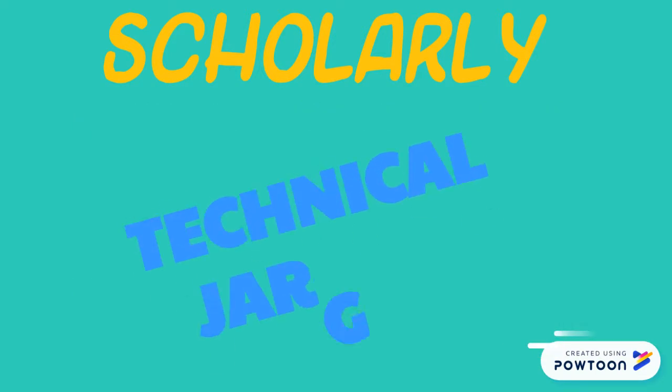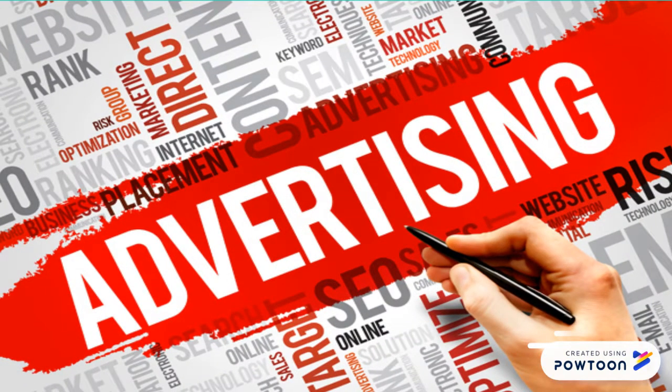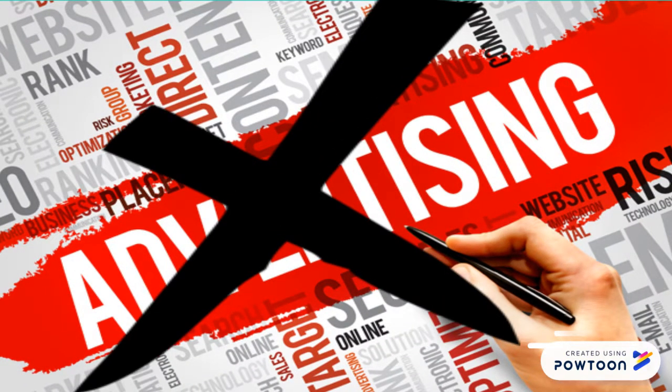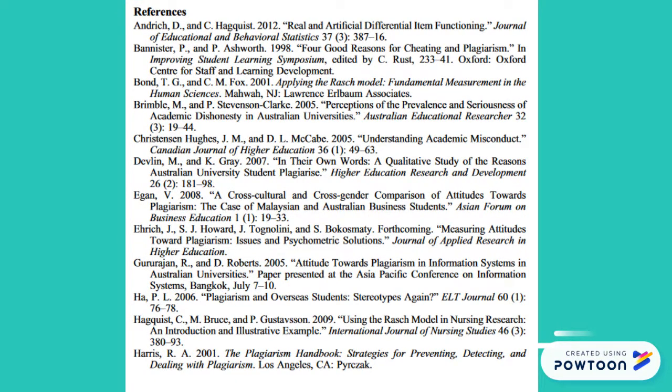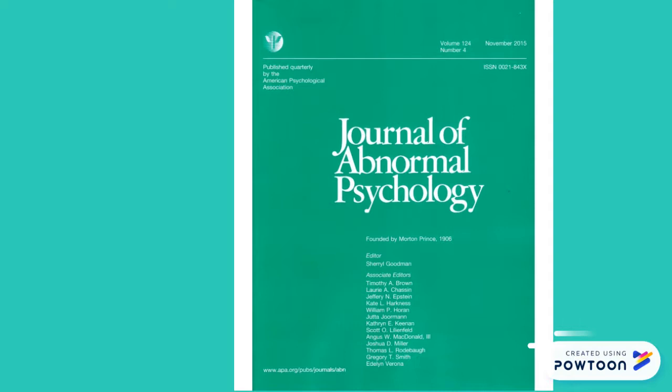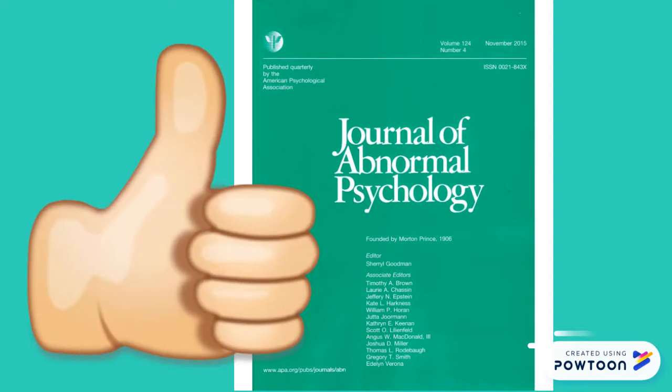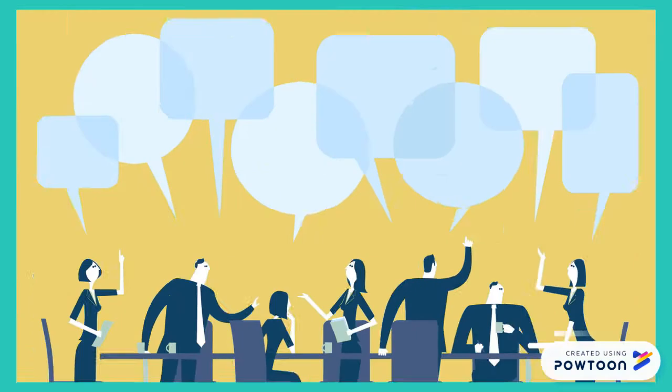Scholarly sources generally don't have very many ads, but they do have a long list of references or consulted works. An article from the Journal of Abnormal Psychology is a great example of a scholarly source. Scholarly sources mainly come from academic journals that have experts analyze and review all the articles before they can be published.